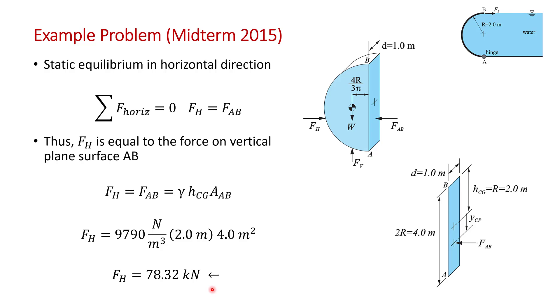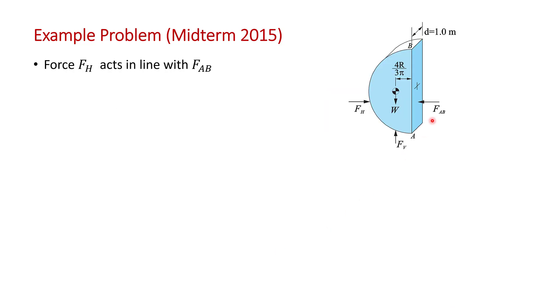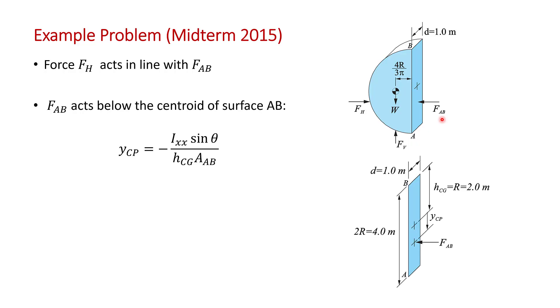So now we have FH. The last thing to do is to determine where FH acts, the line of action. We treat AB as a plane surface. So it's using the methods for a plane gate that we learned in a previous video. You can get the location of FAB. It acts below the centroid of surface AB by a distance of minus Ixx sine theta.